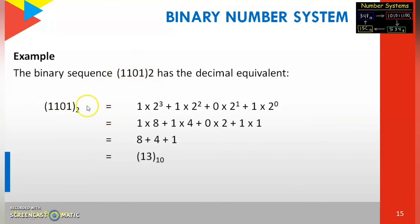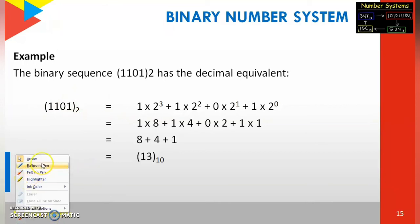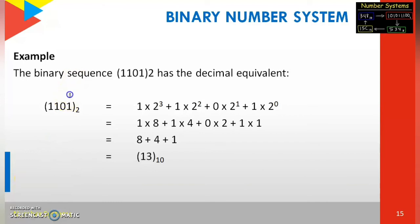1101 base 2 equals: we represent the positional value by powers of 2. The positional values for this number starting from the right are 0, 1, 2, 3. So: 1 into 2 power 0, plus 0 into 2 power 1, plus 1 into 2 power 2, plus 1 into 2 power 3.